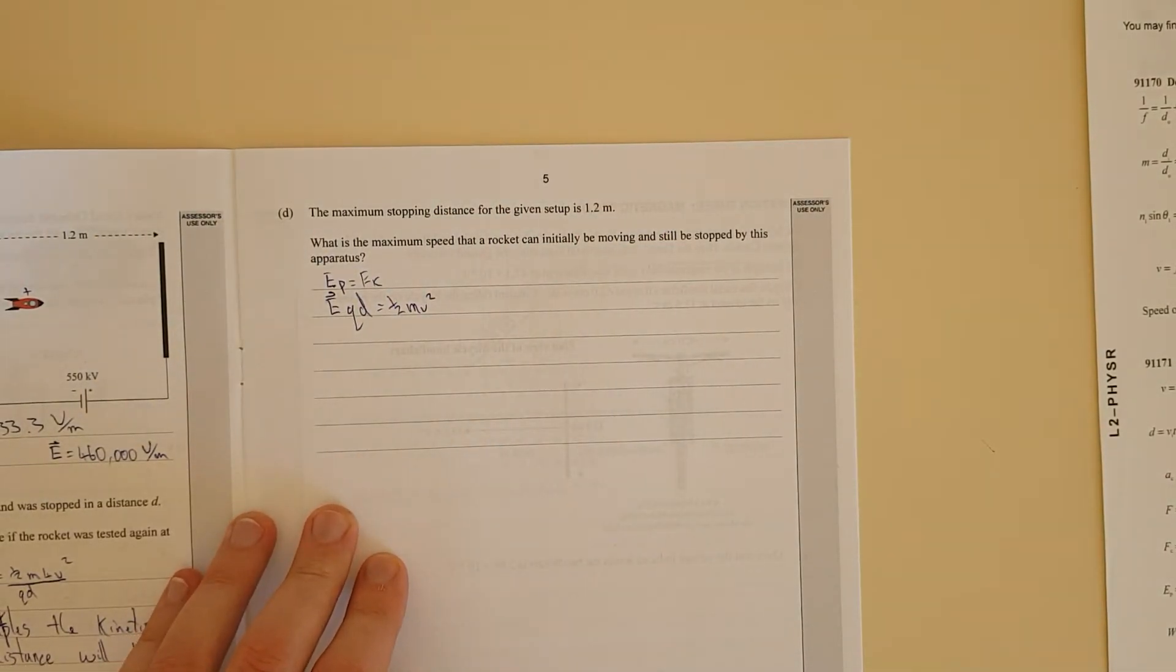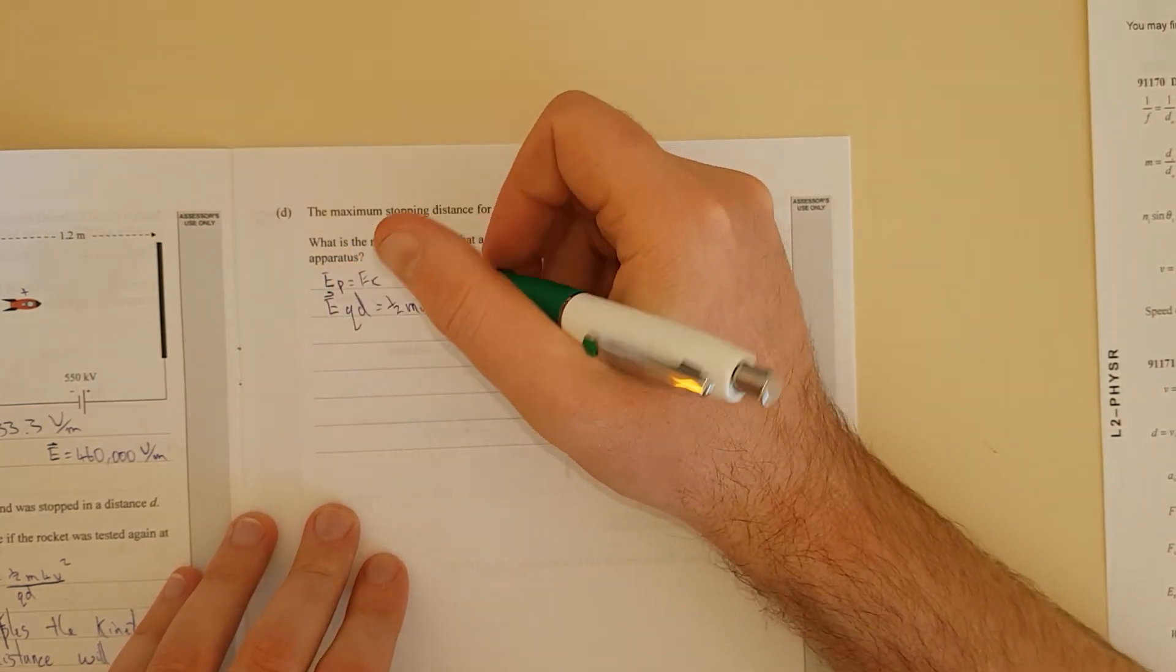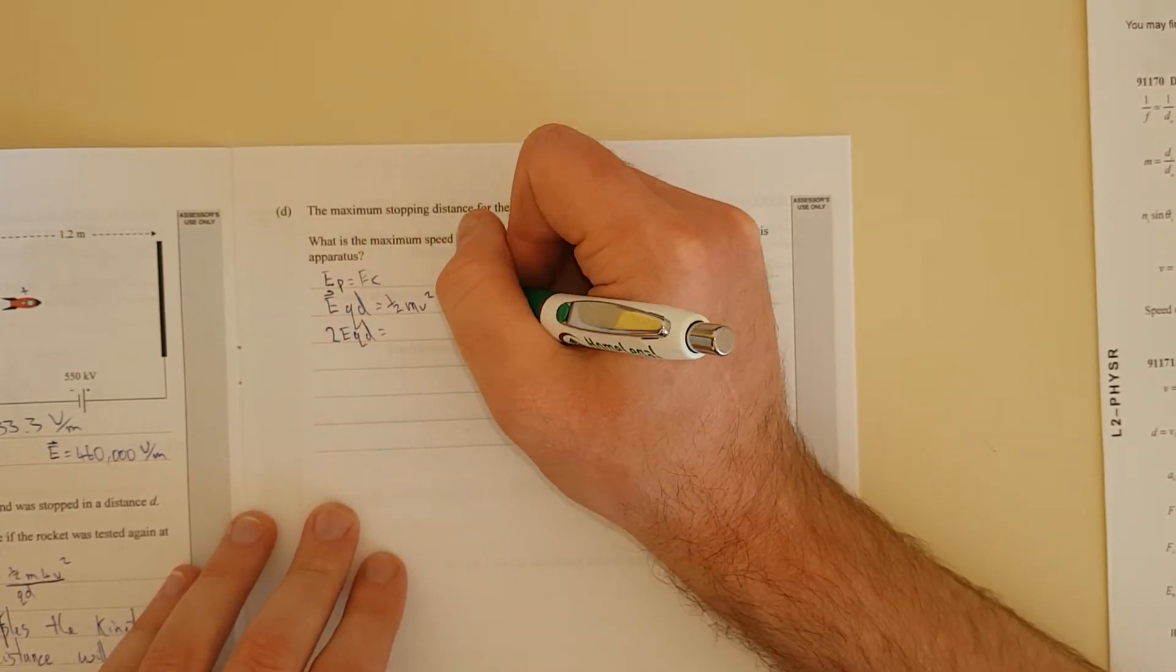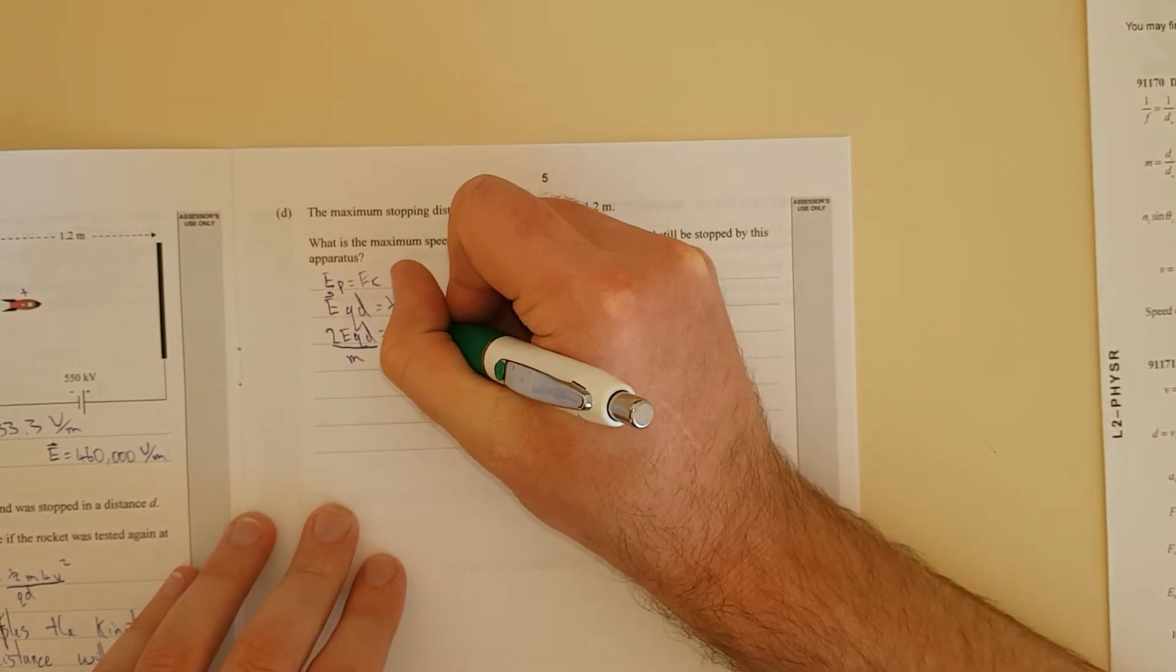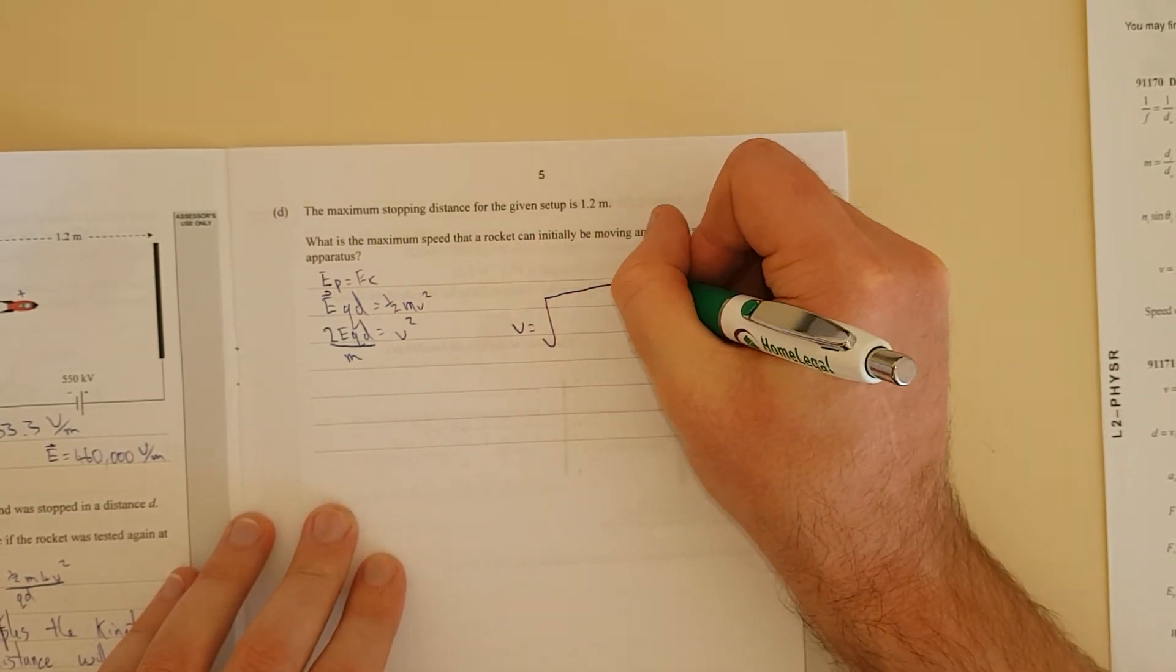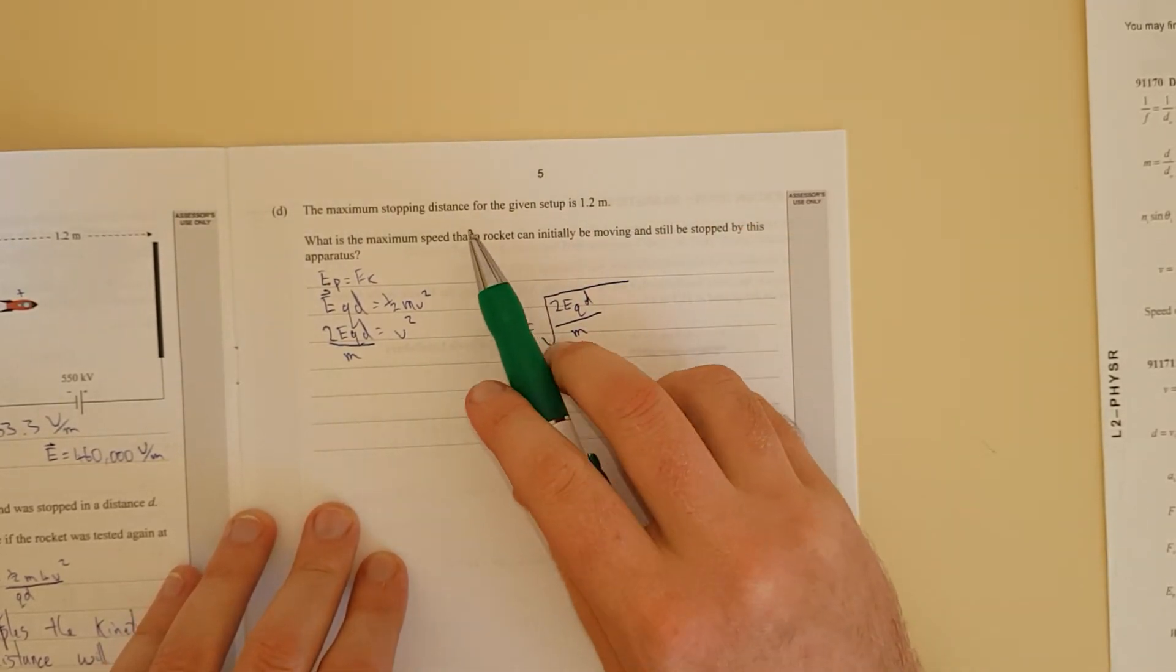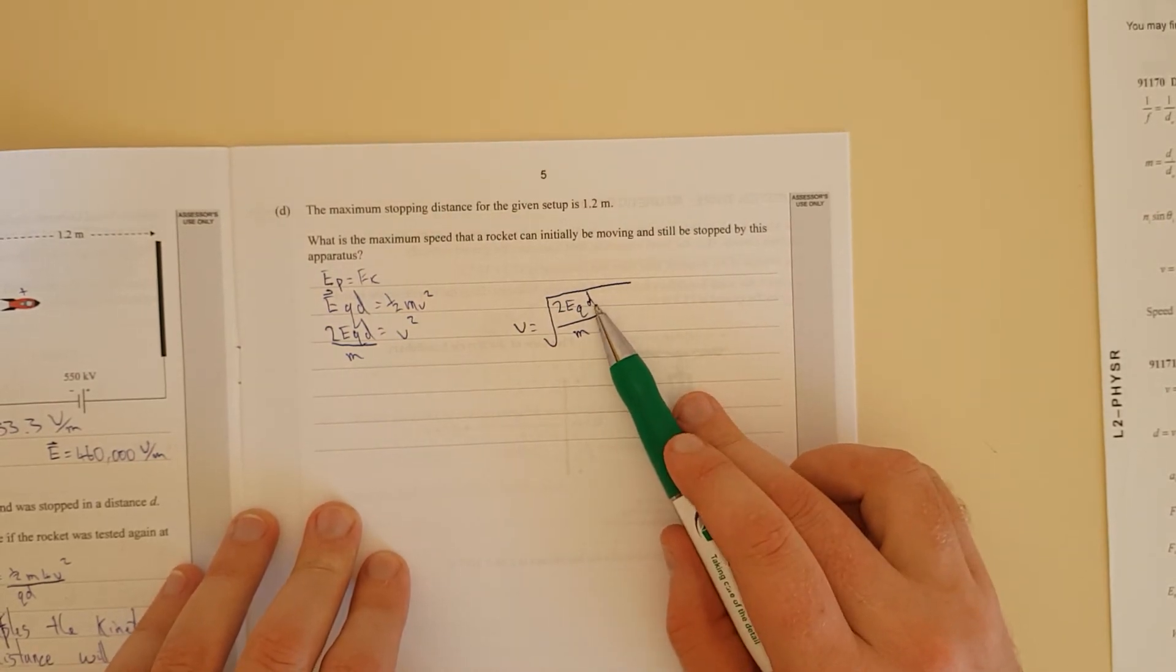It's asked for the maximum speed. So we're going to rearrange for velocity. So essentially we're going to times both sides by 2 to get rid of the half. So we have 2EQD equals MV squared. But I'm going to divide both sides by M as well. Equals V squared. And now we can see V is equal to square root 2EQD over the mass.